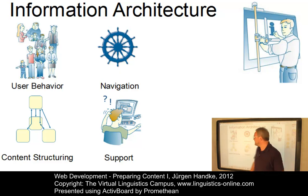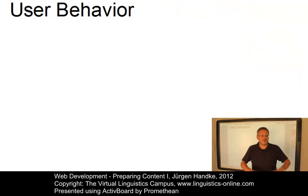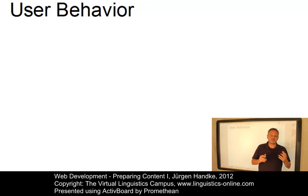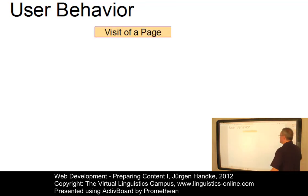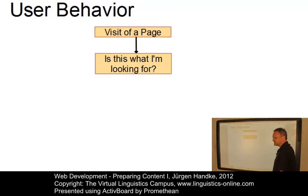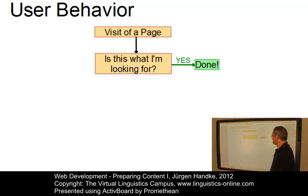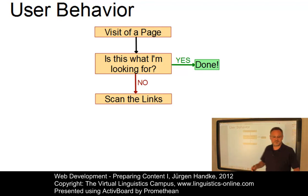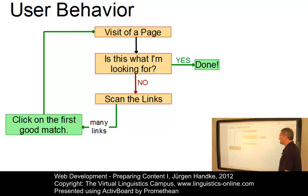In a simplified user behavior diagram, we can see the most likely way users follow when visiting a web page. When they visit a page, they want to find out first whether this is the site they were looking for. If that's the case, they're done. However, in many cases this is not the case, so they scan the links on the site.